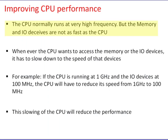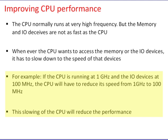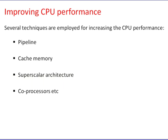Improving CPU performance. The CPU normally runs at very high frequency, but memory and I/O devices are not as fast. Whenever the CPU wants to access memory or I/O devices, it has to slow down to the speed of that device — for example, if the CPU runs at 1 GHz and the I/O device at 100 MHz, the CPU must reduce its speed, reducing performance. Techniques employed for increasing CPU performance include: pipeline, cache memory, superscalar architecture, and co-processor.